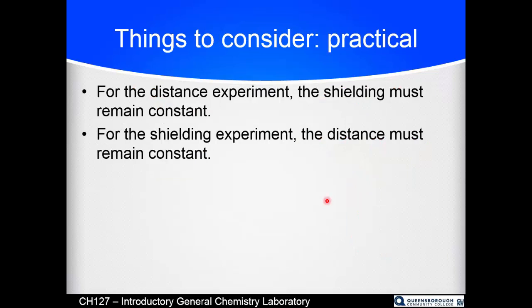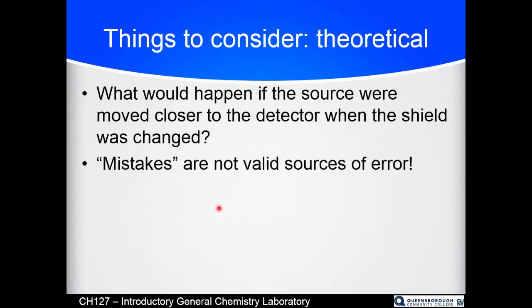Things we got to watch out for: for the distance experiment, you got to make sure that the shielding is constant and we're just not going to use any shield when we do the distance experiment. When we measure the different types and different thicknesses of shielding, we got to make sure the distance stays constant so that we don't change two things at once. That's a basic tenet of doing experimentation as you try and keep all of your variables except one constant and measure the effect of changing that one variable. When you start changing multiple things at once, it gets a little hard to keep track of it.